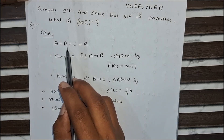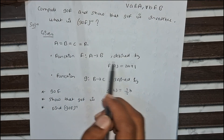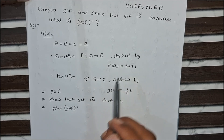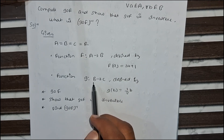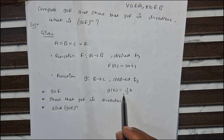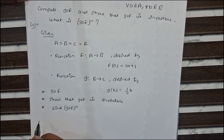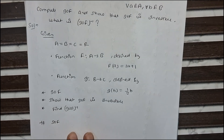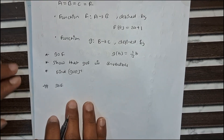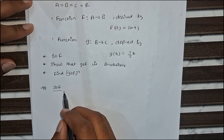So what is given: A equals B equals C equals R, and two functions are there — f from A to B defined by f(a) = 2a + 1, and second function g from B to C defined by g(b) = (1/3)b. Now go for the first problem: g∘f, using the definition of composition.